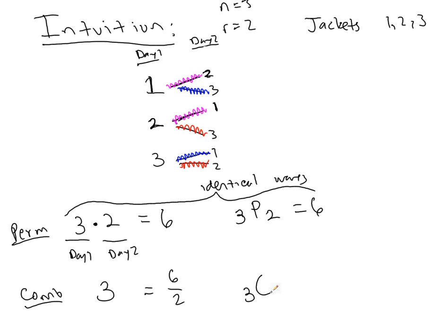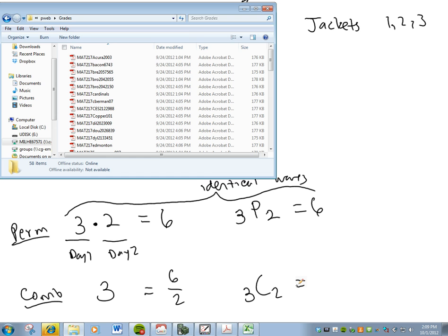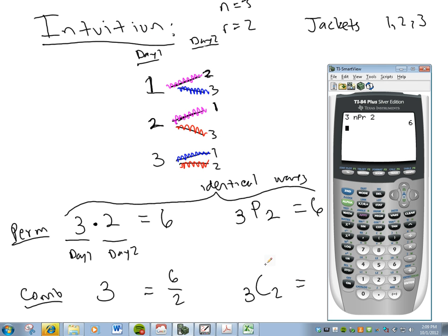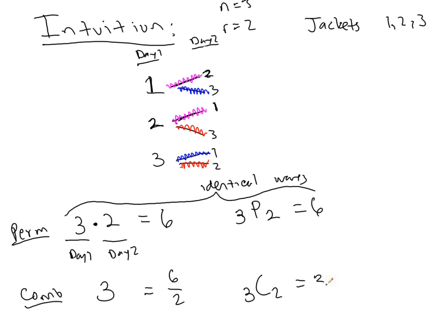So if we actually did 3 combination 2, that would give us 3 combination 2, and we would get 3 total things. So that's kind of the principle behind these. The orderings are just eliminated with a combination because we divide by the number of replicates. To do this with more branches would get a little bit more complicated, but the general formula works.